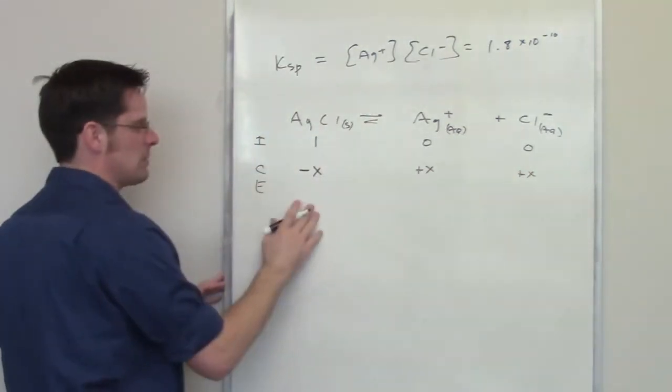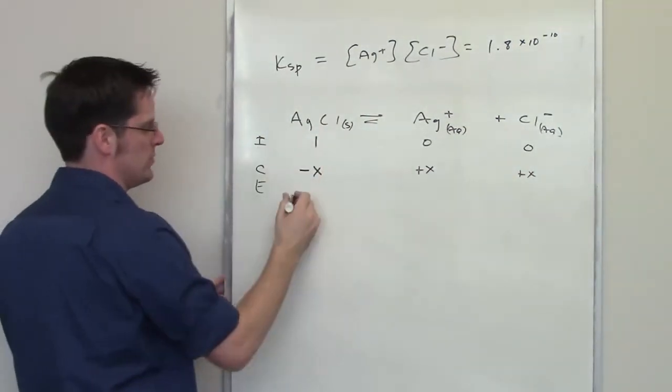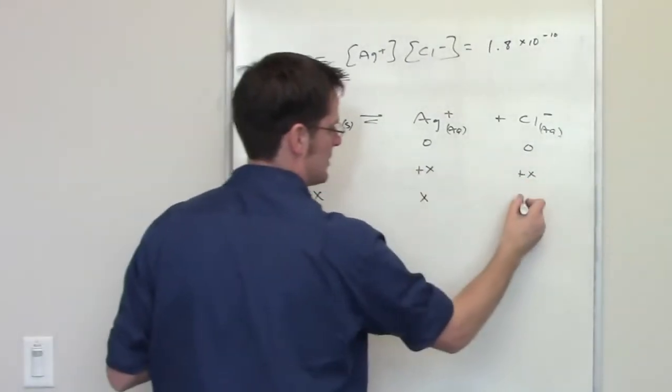Now, the final equilibrium concentration, that is going to be achieved by adding up rows 1 and 2. I've got 1 minus X here. 0 plus X, or just X there, and the same thing over here.